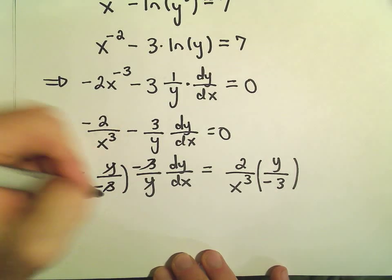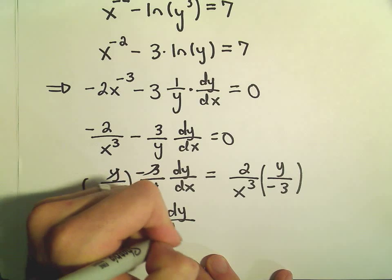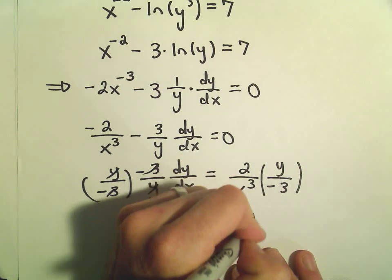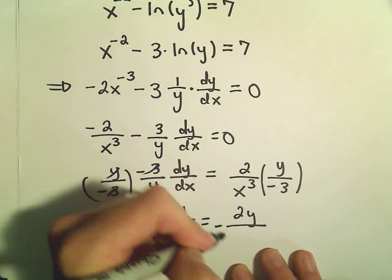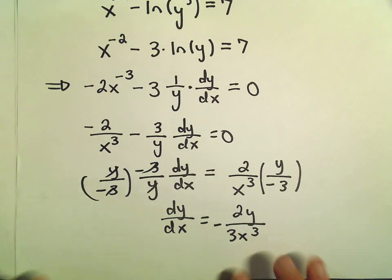And then on the left side, all that stuff just cancels out. We'll be left with our dy over dx. And then on the right side, we've got 2y over negative 3x to the third. And now we've found our derivative.